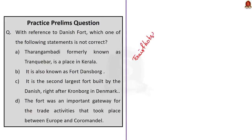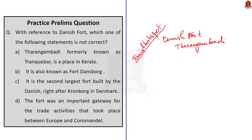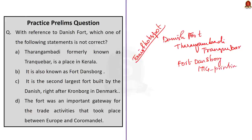That's all about this news article. To summarize: the Danish fort is located in Tarangambadi, Tamil Nadu, formerly known as Trankubar, the base of Danish settlement in the 17th century. Its other name is Fort Danzberg. It is the place where the printing press in India was established in 1714 and printed the New Testaments in Tamil.